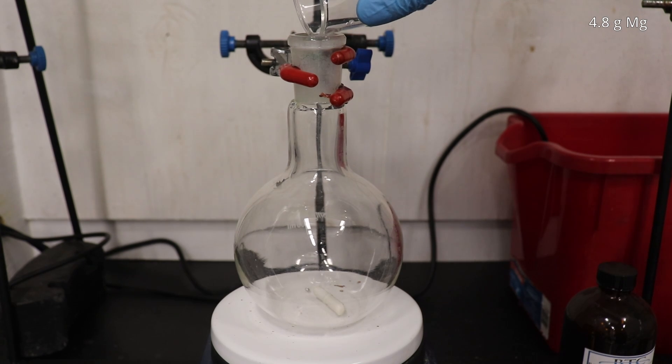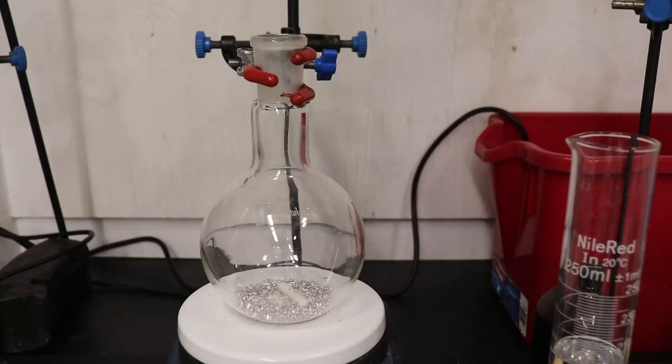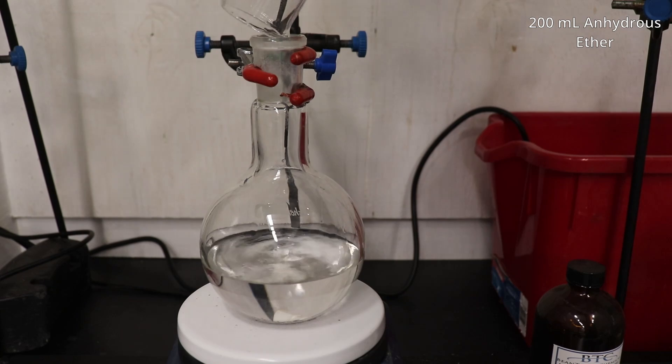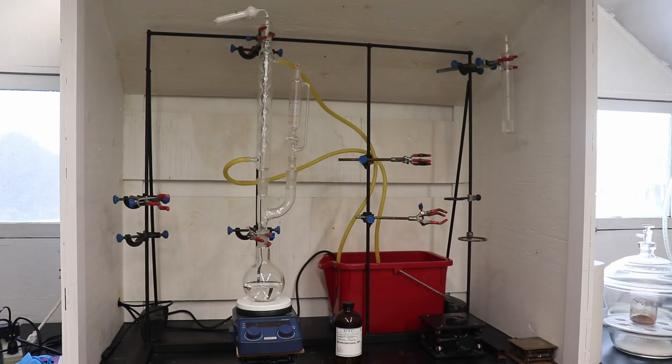To get started, we first have to prepare a phenyl magnesium bromide solution. So 4.8 grams of magnesium metal granules were added to a 500 milliliter flask. This was followed up by the addition of 200 mils of sodium dried diethyl ether.